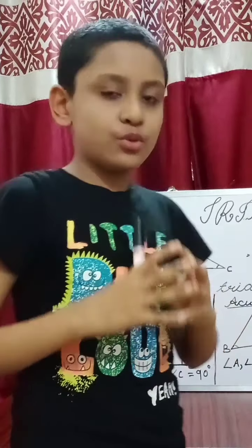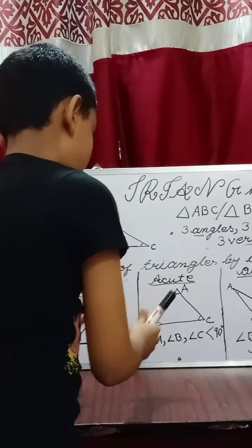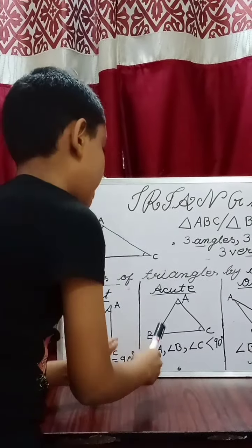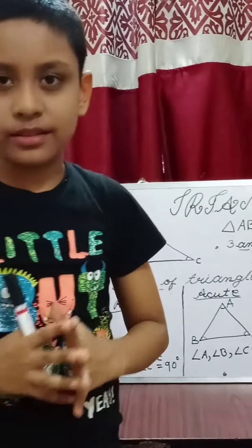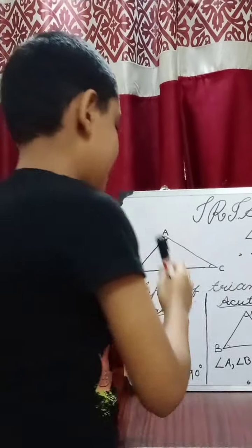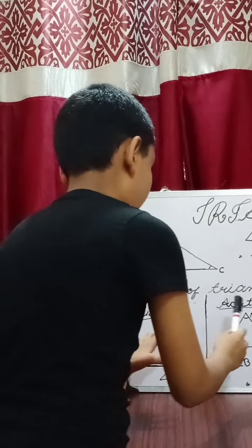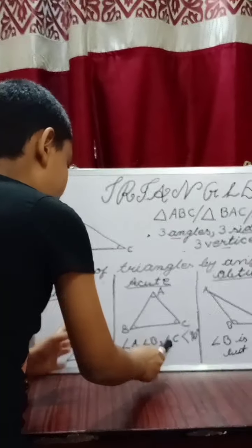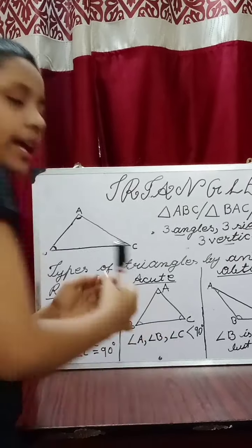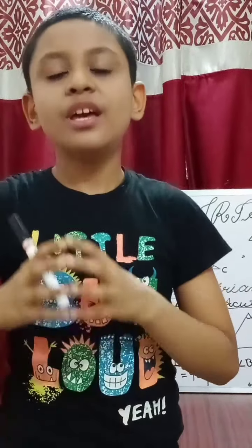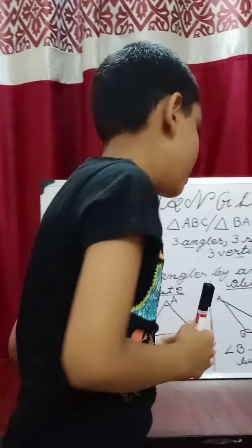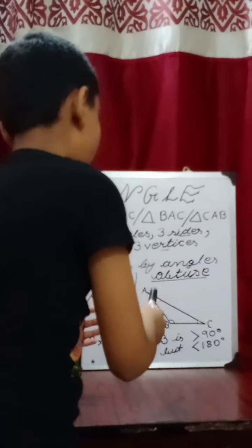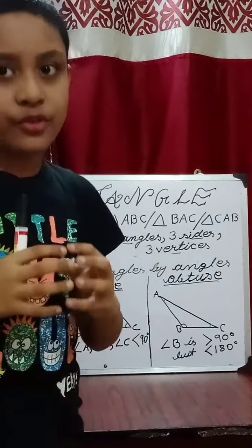Now let's move on to the acute angle triangle. In an acute angle triangle, all the angles are acute angles. In this triangle, angle A, angle B, and angle C are all less than 90 degrees, which makes them acute angles.